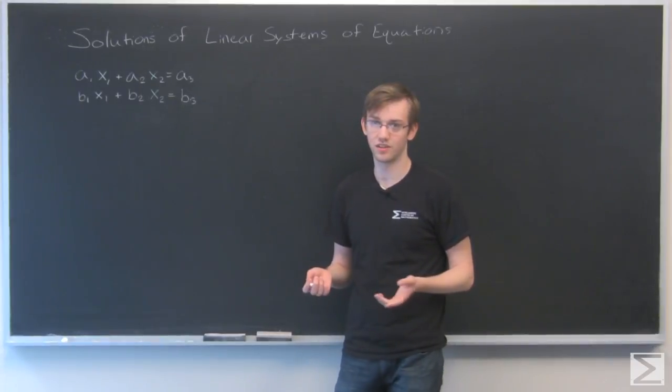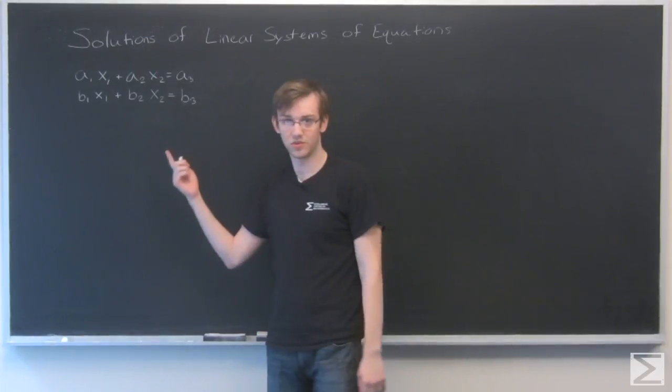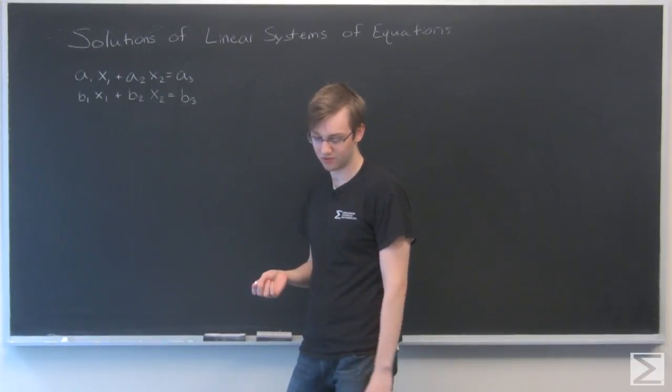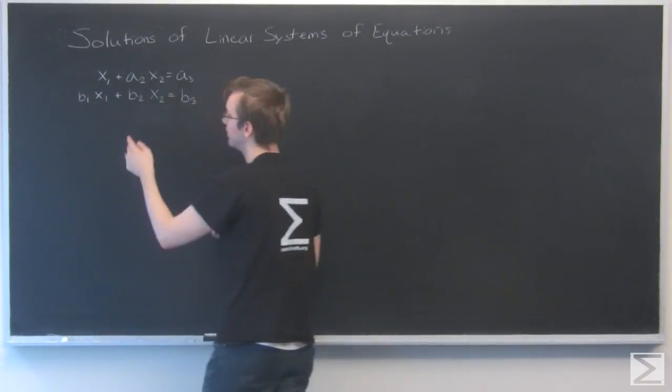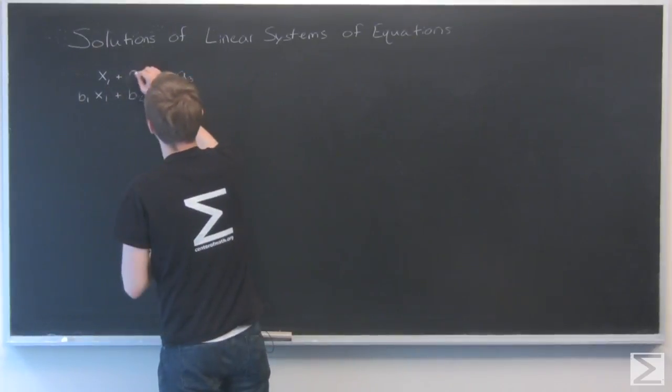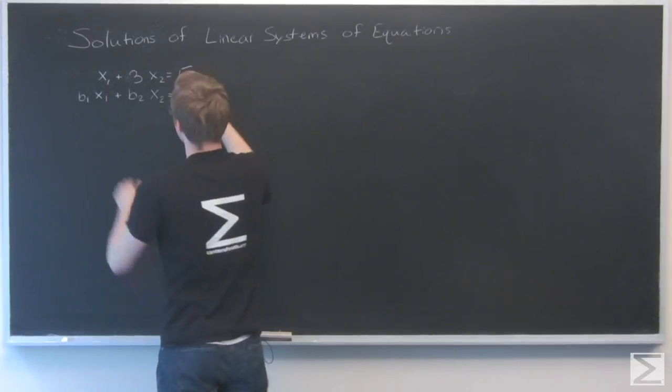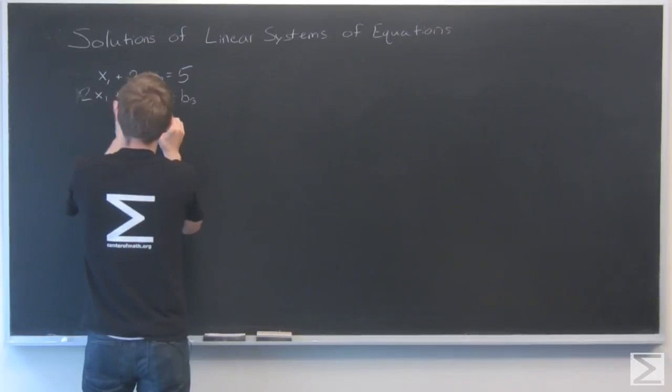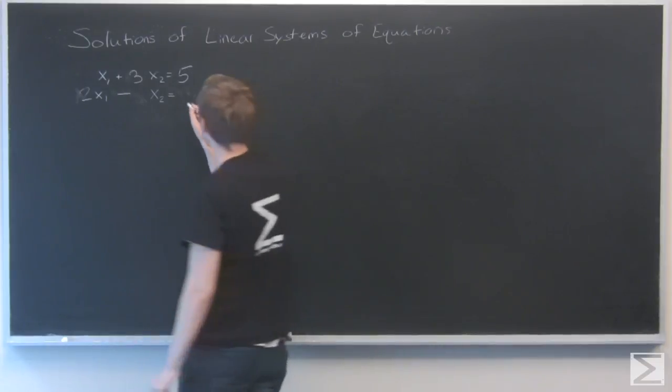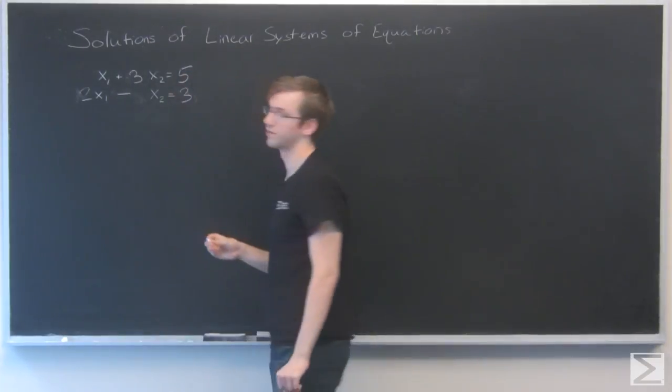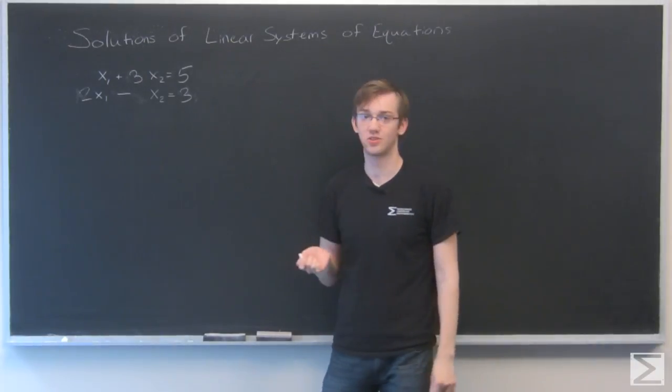This is something you've probably learned in algebra or algebra two, just ways that you can solve the system. I'm just going to put real numbers into this system so we can try it out for ourselves. So a1 is going to be 1, a2 is 3, b1 is 5, this is 2, this is minus 1, and b2 is 3. So I'm sitting in my algebra two class and I have to solve what x1 and x2 are in this equation.